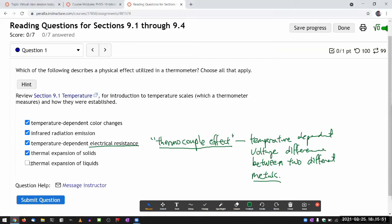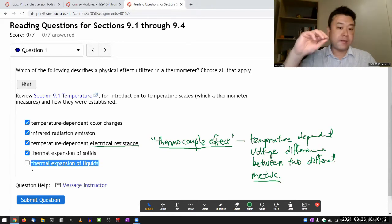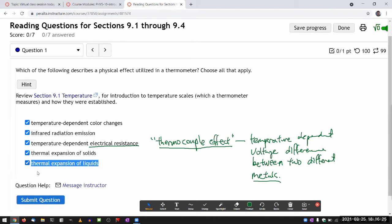And the last one, thermal expansion of liquids. Oh, I guess that's actually the most common one that you would have seen in high school science lab. If you have seen an alcohol thermometer, or what used to be mercury thermometer, the reading that you take is from the liquid level, and you have a reservoir at the bottom where most of the expansion occurs. So yeah, this is kind of the classic design of thermometer.